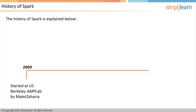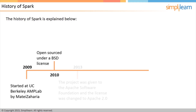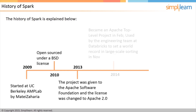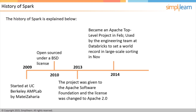Spark was started at UC Berkeley Amp Lab by Matei Zaharia in the year 2009. It was in 2010 when it was open sourced under a BSD license. The project was then donated to the Apache Software Foundation, and the license was changed to Apache 2.0 in the year 2013. In February 2014, Spark became an Apache top-level project.